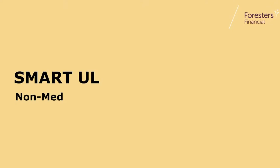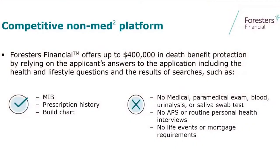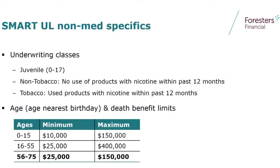I think this is where we really shine because, as a middle market type carrier, you'll be able to see where you can get a case issued in a very, very short time on our non-medical basis. When we look at non-medical, we're looking at really these three items: MIB, prescription history, and a build chart. That's it. We're going to answer the lifestyle and health questions, but we don't need a random telephone call. We don't need a mortgage card. We're going to underwrite your client based upon those three items.